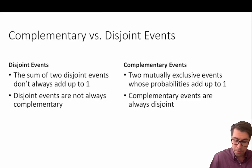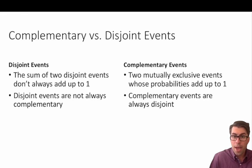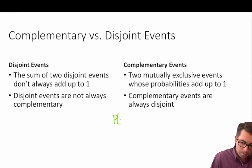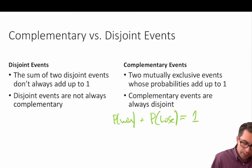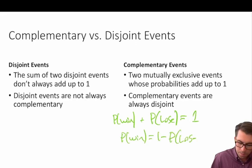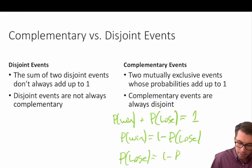A complementary event consists of two mutually exclusive events whose probabilities add up to one, and complementary events are always disjoint. Take a simple game where you can either win or lose — the probability of win plus the probability of lose equals one. So these are complementary events. The probability of winning equals one minus the probability of losing, and vice versa.